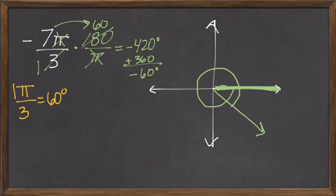So my angle would look like this. So negative 420. And I'm just kind of graphing negative 60 there. So it ends up in quadrant number 4.